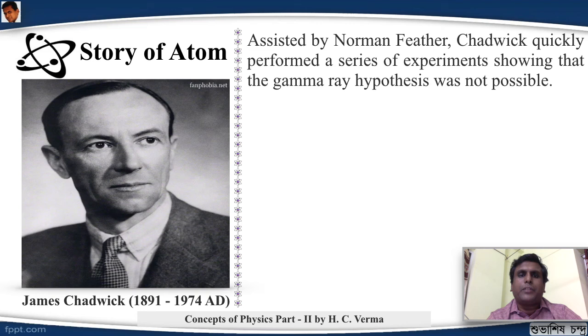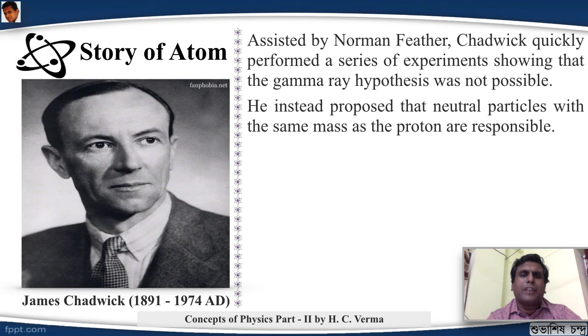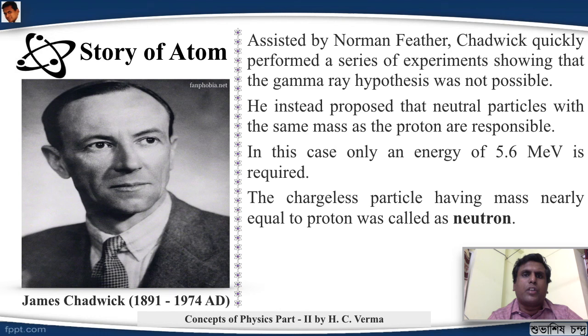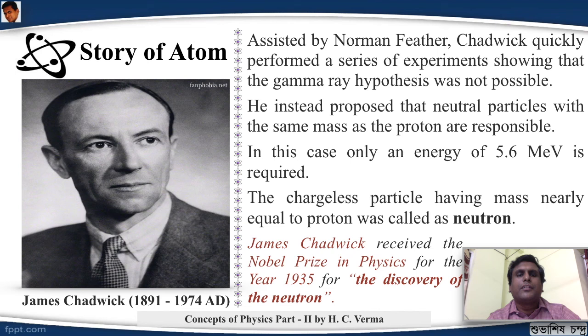The gamma ray hypothesis was not possible. He instead proposed that neutral particles with the same mass as the proton are responsible. In this case, an energy of 5.6 MeV is required, which is possible. The chargeless particle having mass nearly equal to the proton was called as neutron. James Chadwick received the Nobel Prize in physics for the year 1935 for the discovery of the neutron. James Chadwick was the student of Ernest Rutherford. So J.J. Thompson discovered electron, his student Ernest Rutherford discovered proton,